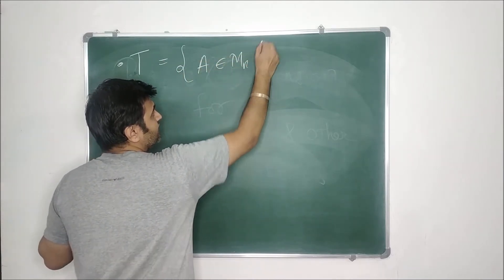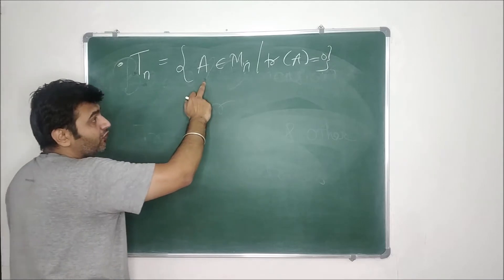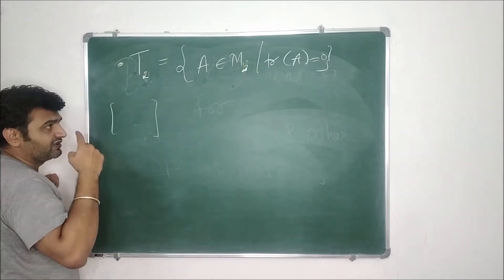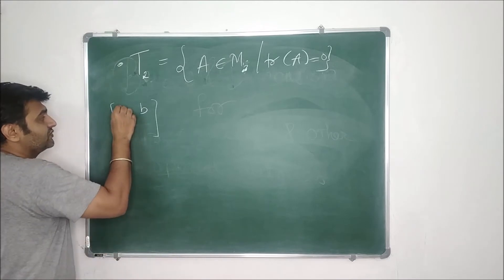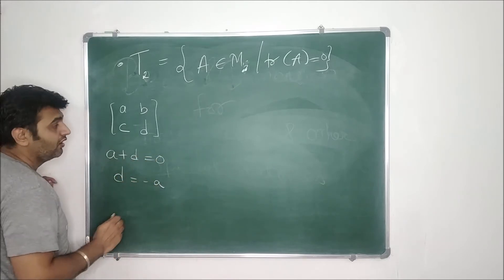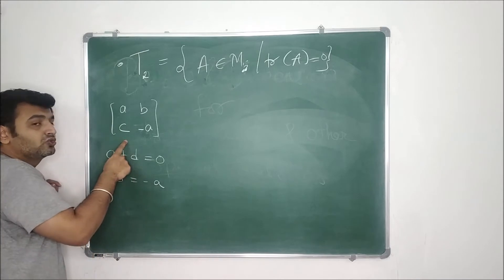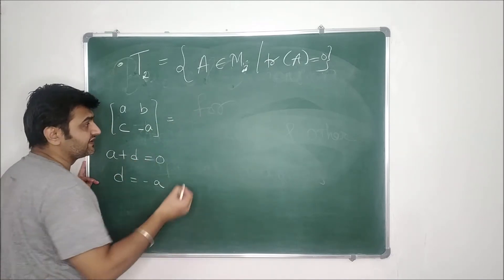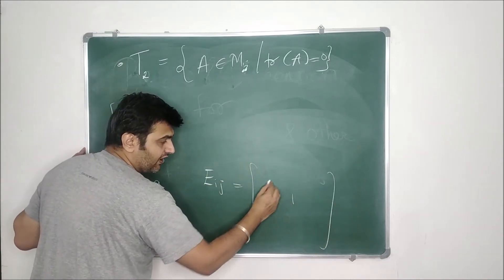Let T_n be the set of all n×n matrices whose trace is zero. For simplicity, let me do the n=2 case. Since I'm interested in the sum of the diagonal entries, the non-diagonal entries can be anything. For a 2×2 matrix with entries A, B, C, D, trace zero means A plus D equals zero, so D must equal minus A. This entry has no choice. So any 2×2 matrix whose trace is zero is of this form, and we write it using elementary matrices E_ij — the matrix with a 1 in the i-th row and j-th column and zeros everywhere else.